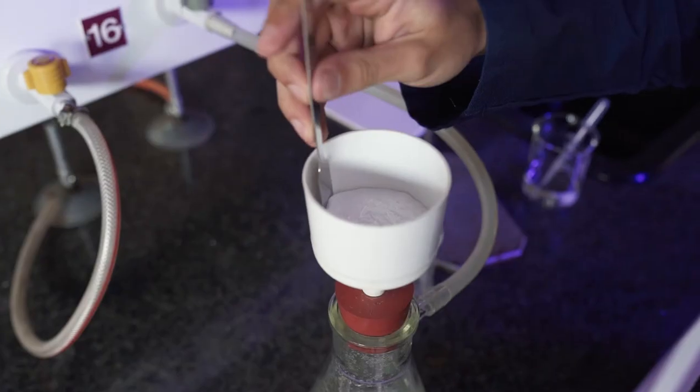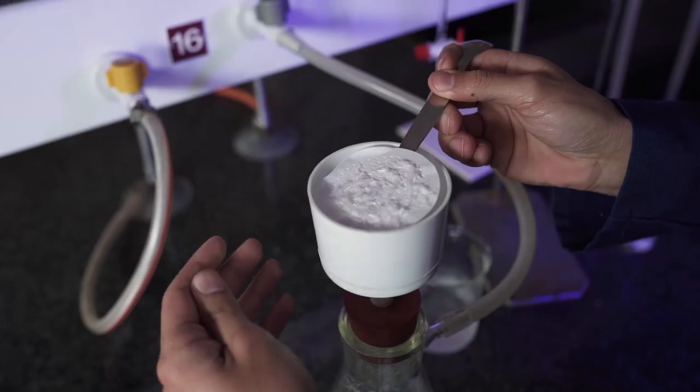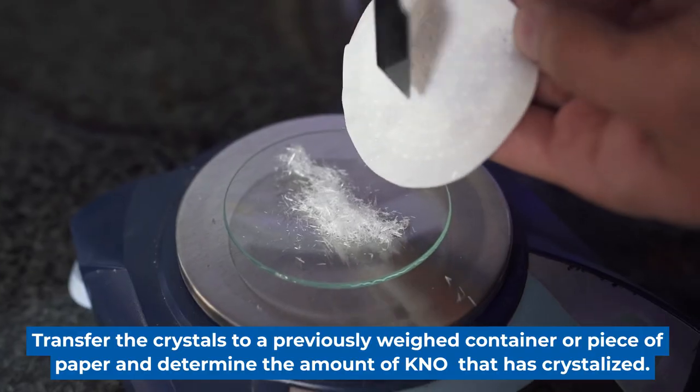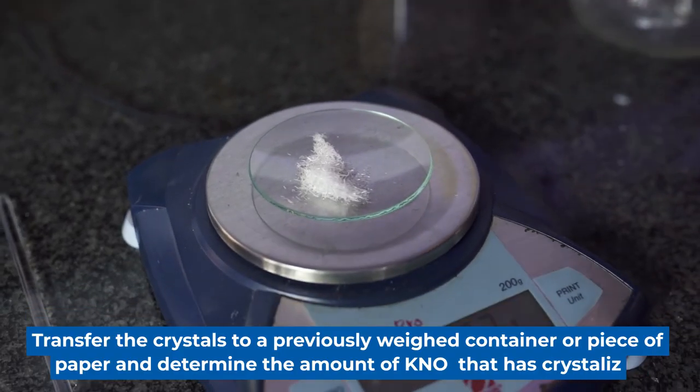Now that the filtration is done, we can remove the filter paper from the Buchner funnel and transfer the crystals to the watch glass so that we can weigh the recrystallized mass.